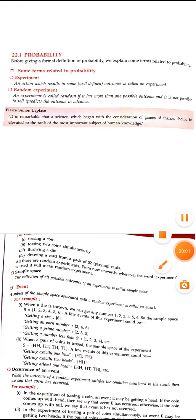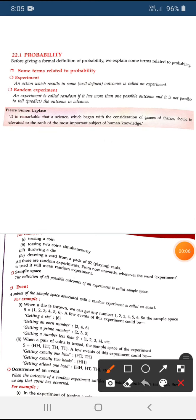Good morning everybody. Today I am going to discuss probability. Probability is simply the possibility of any event. For understanding probability in detail, we have to know a few related terms. The first one is experiment and the second one is random experiment.